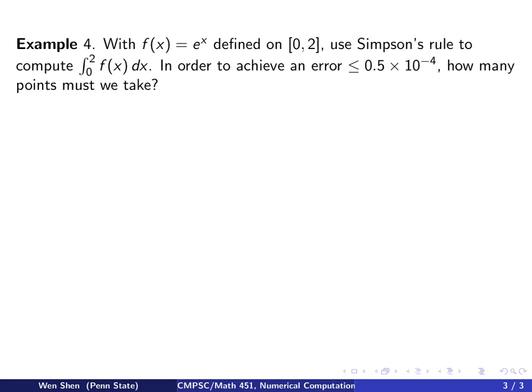Let's consider the example. And this is similar to example number 2 we had for trapezoid rule. So, we want to integrate e to the x on the interval from 0 to 2. Now, use Simpson's rule. And we require also an error less than 0.5 times 10 to the negative 4. And now, we ask the question, how many points at least must we take to guarantee that?